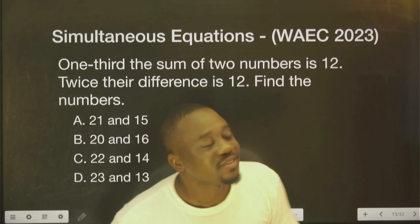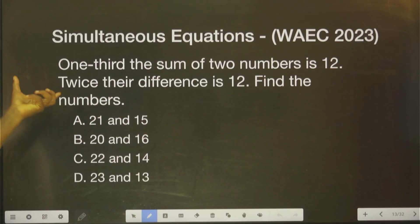Let's look at this question. It says what? One-third of the sum of two numbers is 12. Twice their difference is 12. Find the numbers.